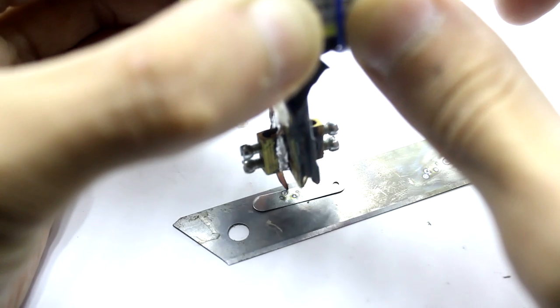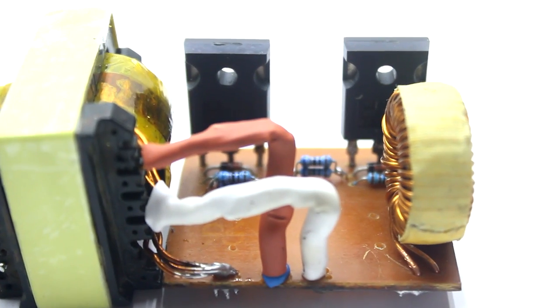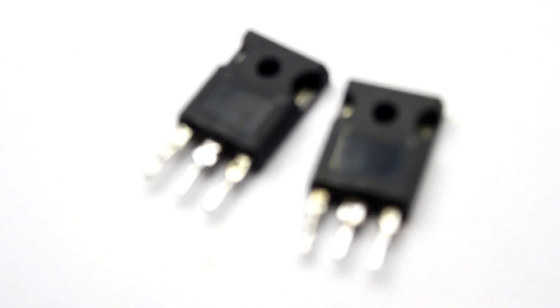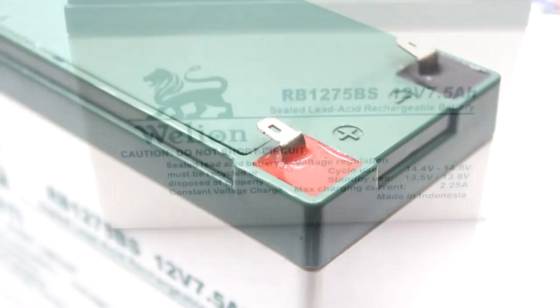Now let's speak about the shortcomings. There are quite a few of them. Firstly, the circuit will work correctly from a powerful power source. The slightest drawdown on current can cause the transistors to burn out. For example, I feed it from a battery of uninterruptible power supply.